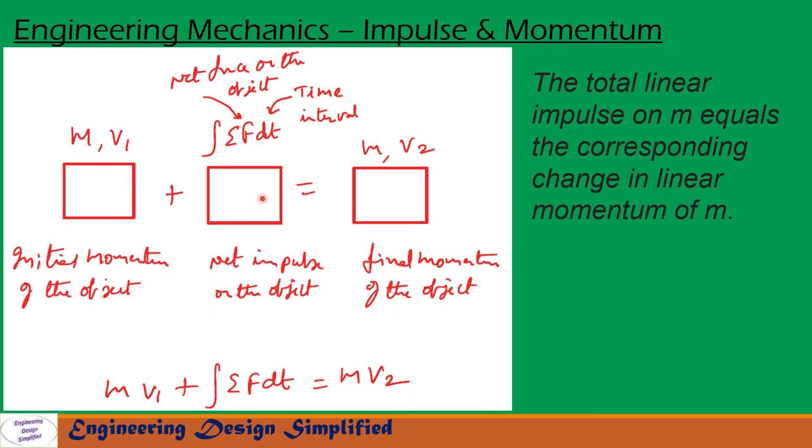So from this diagram, we can write the impulse-momentum equation as m·v₁ + ∫ΣF dt = m·v₂.